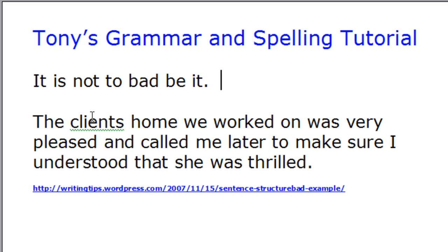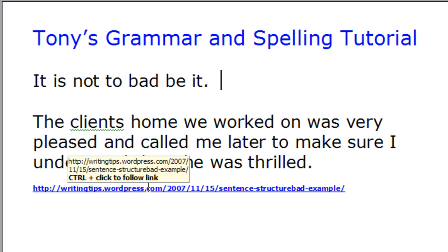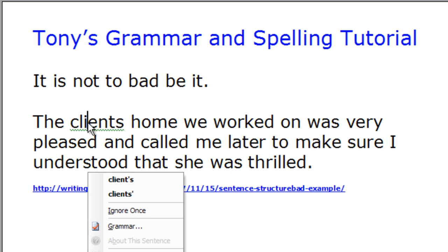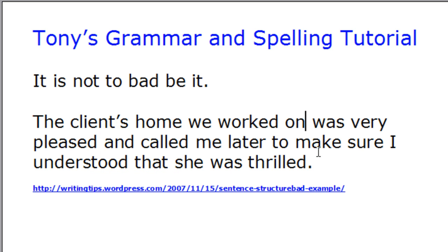Next we have another sentence — this is one I found on writingtips.wordpress.com as an example of bad grammar. Here we have a green squiggly line, so I'm going to right-click on this and it suggests one of two corrections. I'm just going to pick the first one. Again this is a sentence with pretty bad grammar but I'll leave it at that. So the point I'm trying to make is: red squiggly lines are spelling, green squiggly lines are grammar.